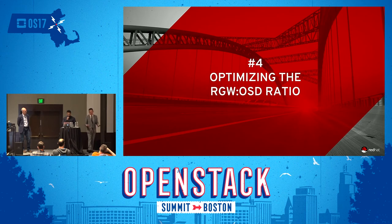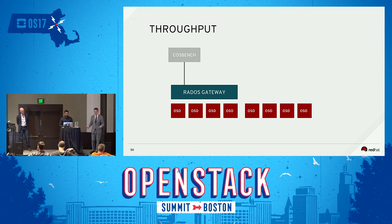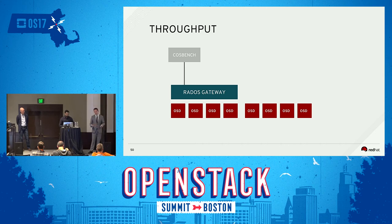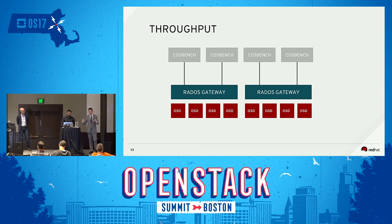For optimizing the RGW to OSD ratio, when people want to maximize throughput, they want to know how many gateways they need to fully saturate the cluster. You start with your cluster of OSDs, one RGW gateway, push client load against it, add more clients until you hit saturation. When you hit saturation, you scale out — add another gateway, then add more clients. At some point, despite adding more gateways, the OSDs are going to be saturated and you'll have diminishing returns. That's when you scale out by adding more OSDs.